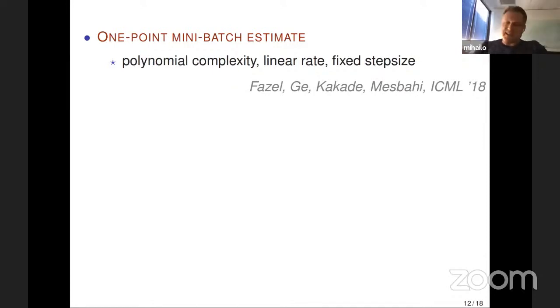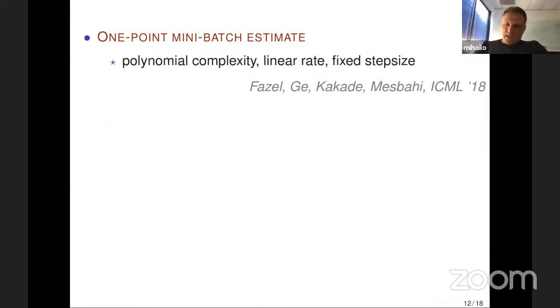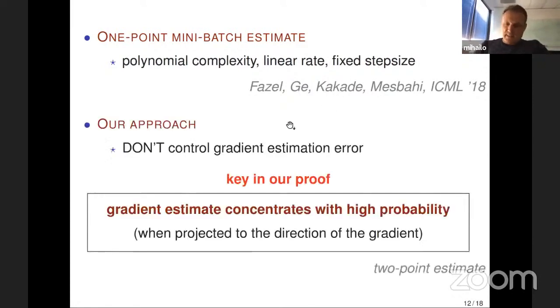One way to establish these results is to try to control the gradient estimation error. This is not what we do in our approach. The key feature of our proof is that we don't try to control gradient estimation error. Rather, we exploit the problem structure and utilize tools from non-asymptotic statistics to show that gradient estimate concentrates with high probability when projected to the direction of the gradient.